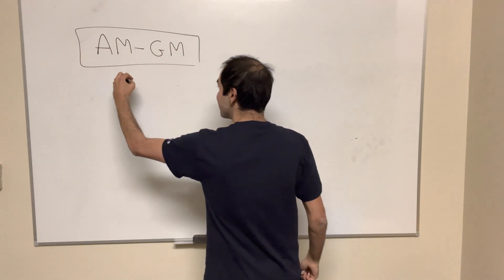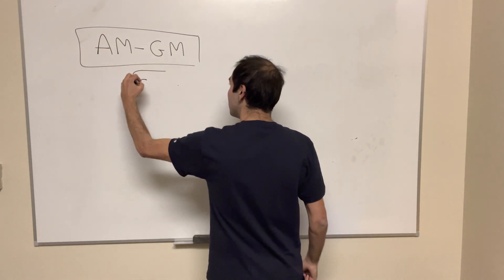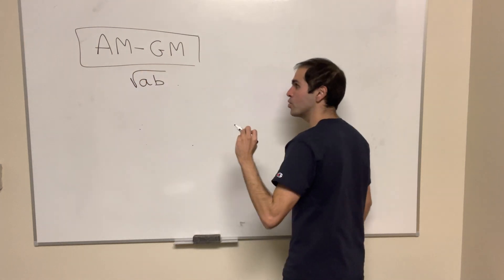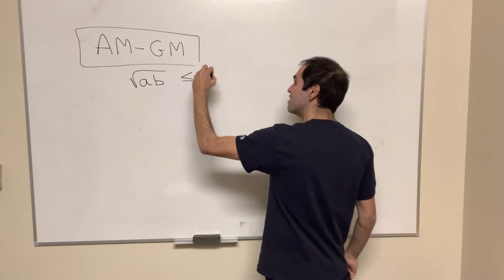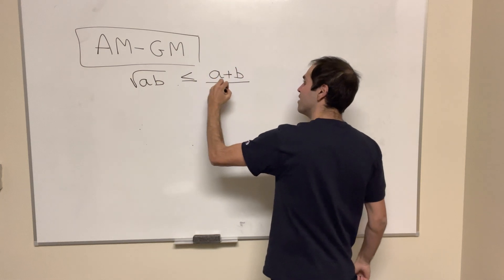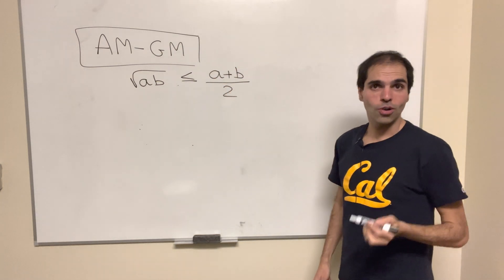More precisely, what this says is that the geometric mean of a and b, so square root of a times b, is less than or equal to the arithmetic mean, which is a plus b over 2.